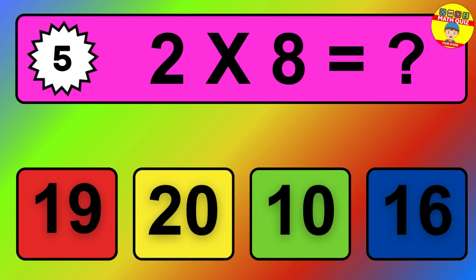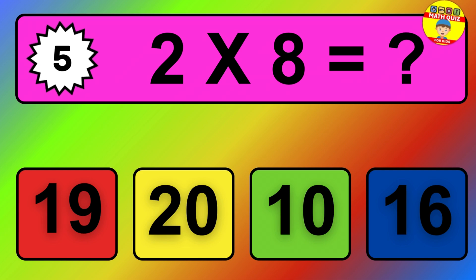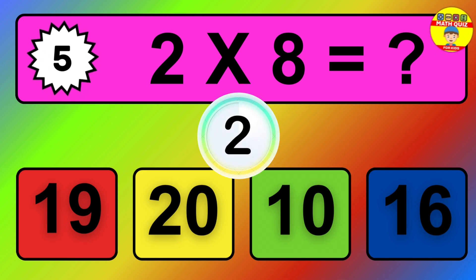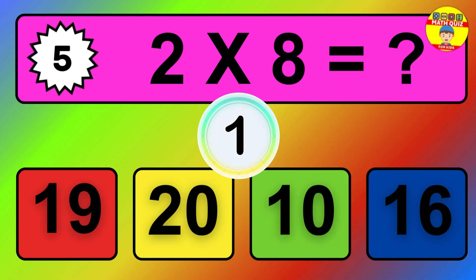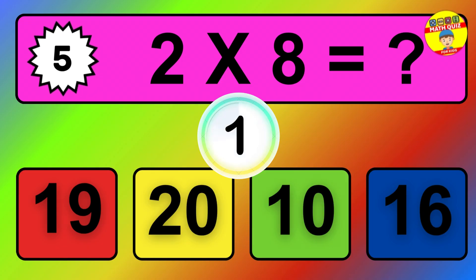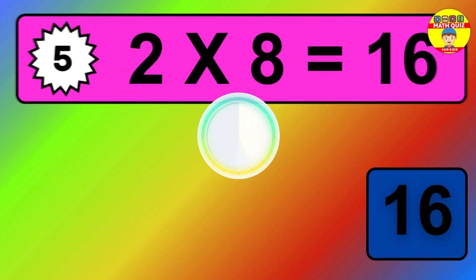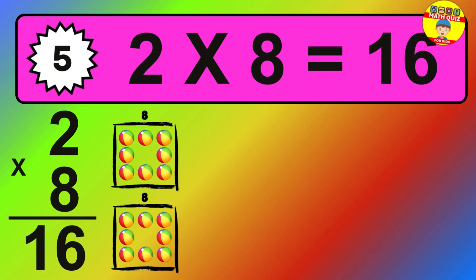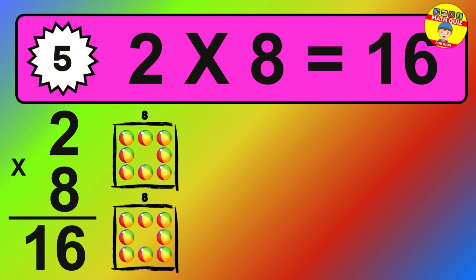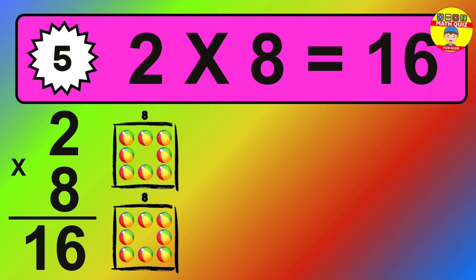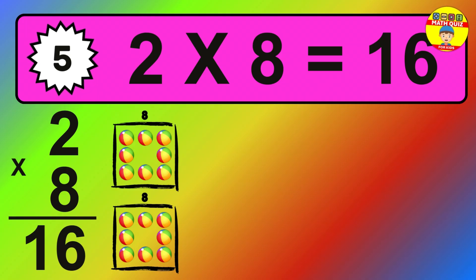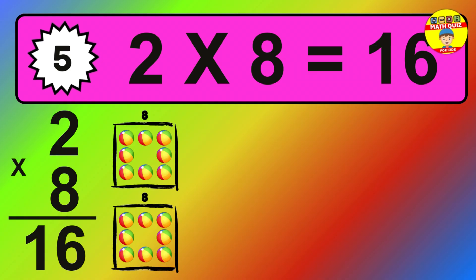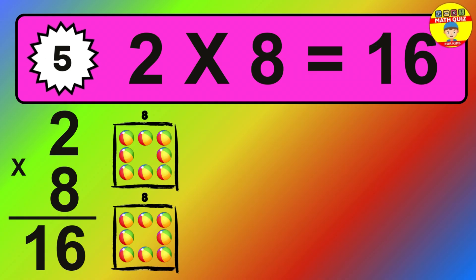Question five: two times eight equals what? The answer is: two times eight is sixteen. To calculate, we have two groups with eight balls each one. So how many balls do we have? Sixteen balls.